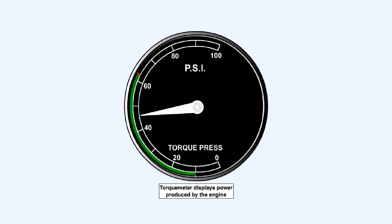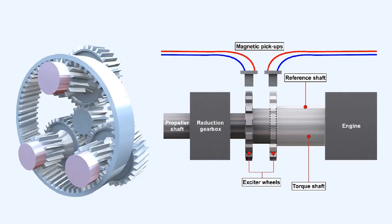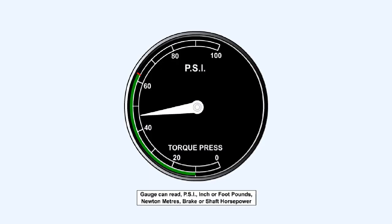The torque meter system measures, and its indicator displays, the power being produced by the engine. There are two main methods employed in measuring the torque of the engine: one uses oil pressure, and the second is an electronic device. The units of measurement vary between systems. The indicator gauges may be calibrated to read pounds per square inch, inch or foot pounds, newton meters, or brake or shaft horsepower.